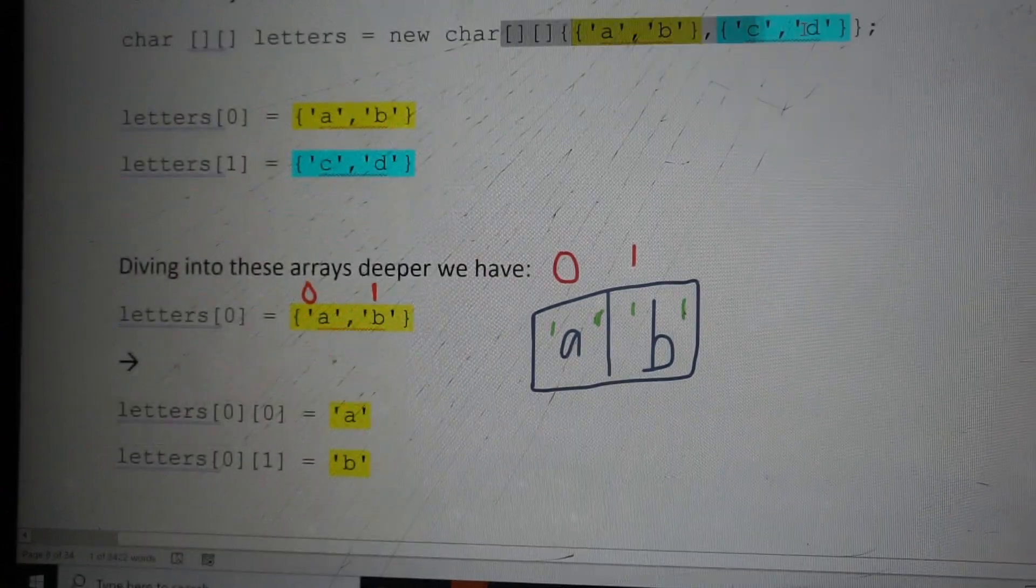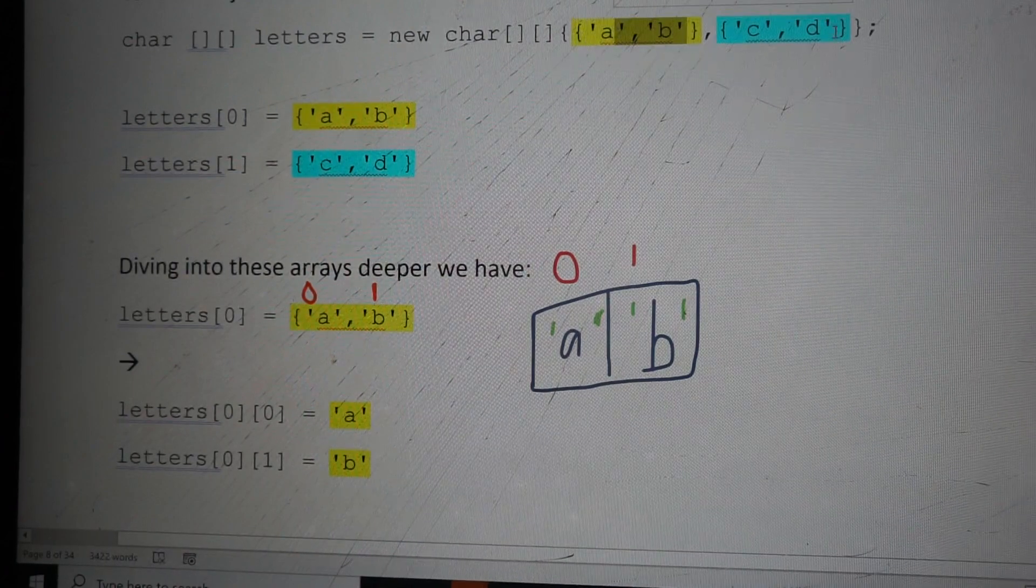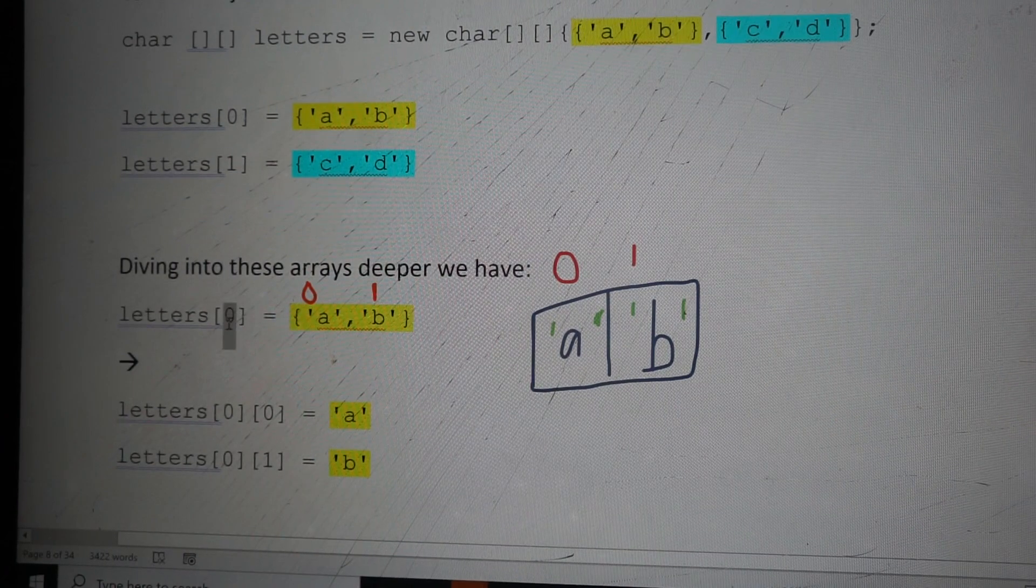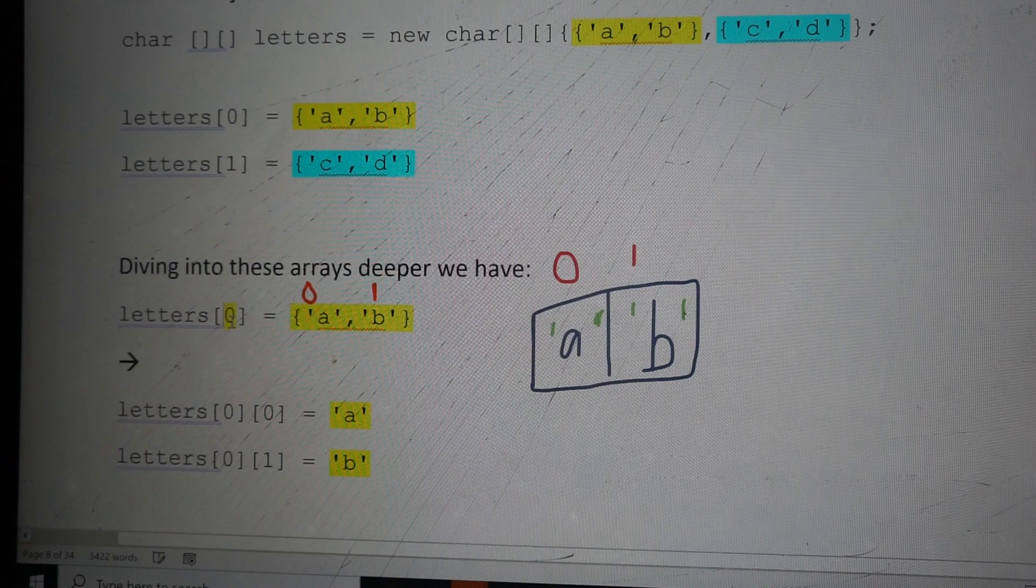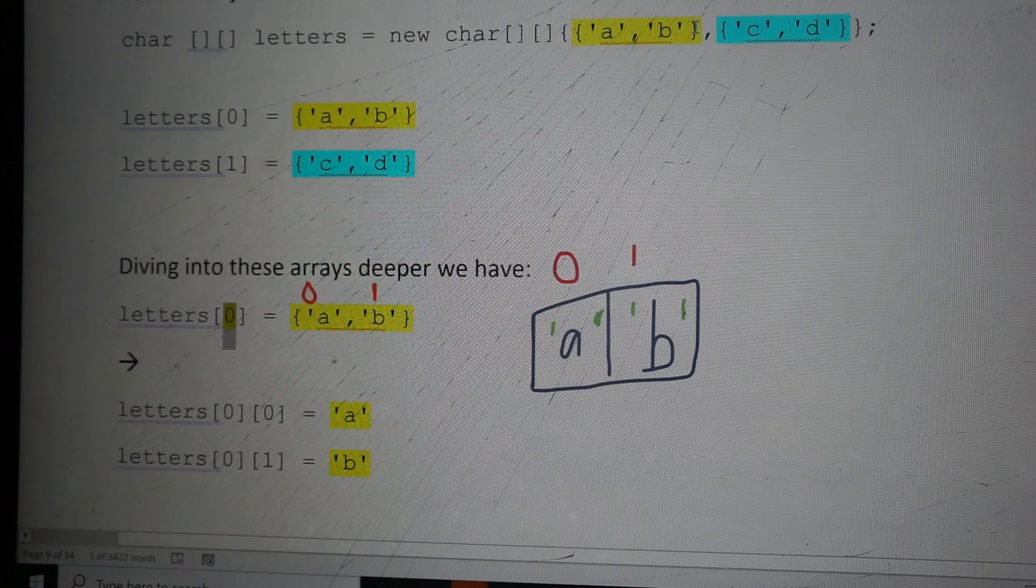What do we choose? Do we choose this array, this yellow one, or this blue one? letters[0] is basically telling us we're going to choose this first one, this yellow one.